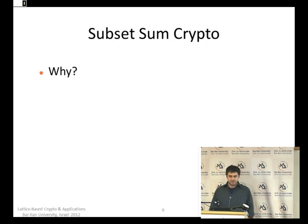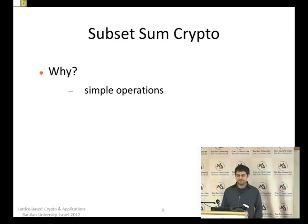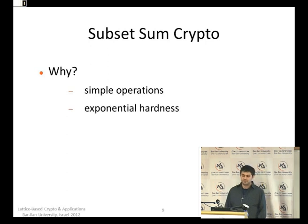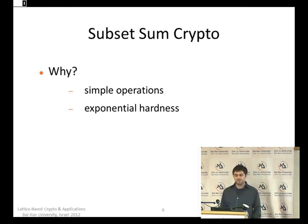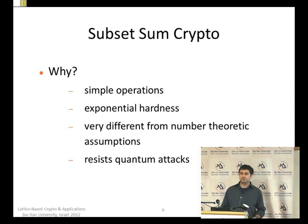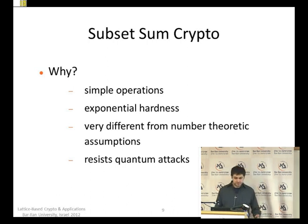Why were people in the 1970s interested in subset-sum crypto? One advantage over number theory is the really simple operations — just adding things, no exponentiation, no multiplications, no complicated modular reductions. There's exponential hardness — we believe subset sum is exponentially hard. And it's very different from number-theoretic assumptions. For example, quantum attacks break factoring and discrete logs with the same algorithm, but subset-sum crypto is different enough to resist this attack.